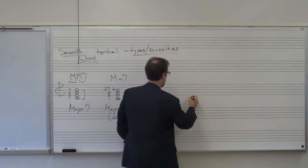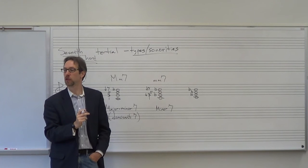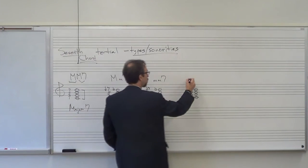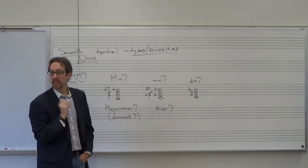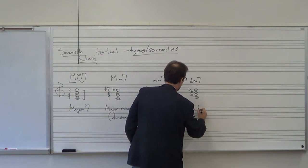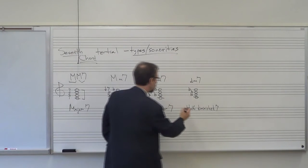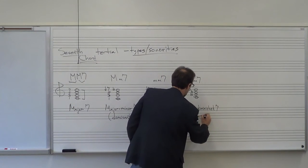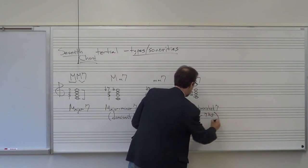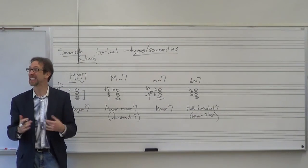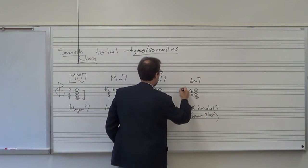We are not done. We have: C, E-flat, G-flat, and B-flat. What type of triad? C, E-flat, G-flat is a diminished triad. What type of seventh? It is a minor seventh. This is called a half diminished seventh. Another name, more commonly used in jazz, would be minor seven flat five. Half diminished seven and minor seven flat five mean the same thing. The formula is 1, lowered third, lowered fifth, lowered seventh.